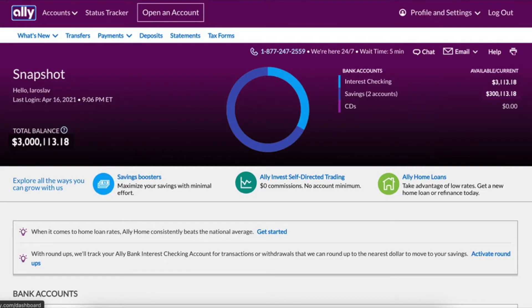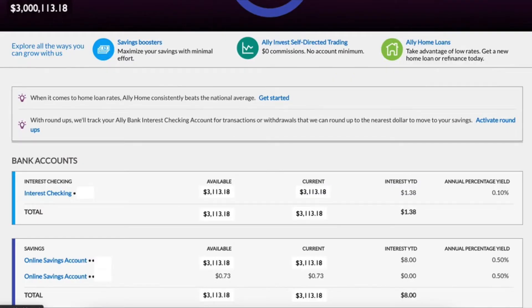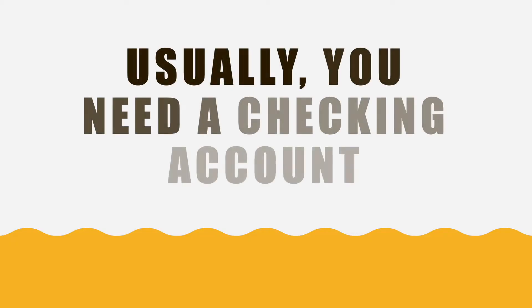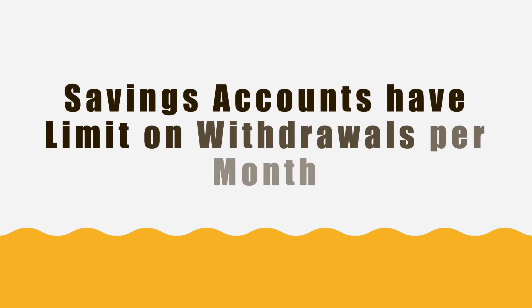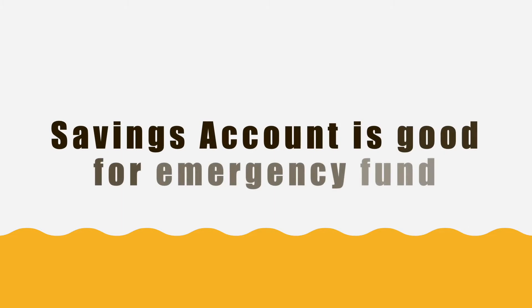On the snapshot page, scroll down and find the account for which you want to find an account number and routing number. In most cases you need a checking account, because savings accounts have a limit on the number of withdrawal transactions per month. Savings accounts are good to make deposits of money that you don't touch often.